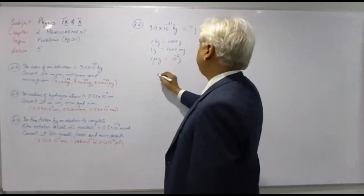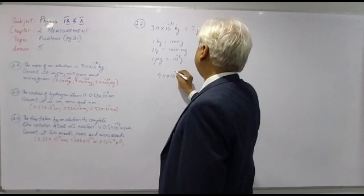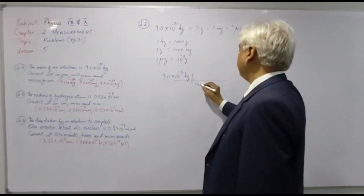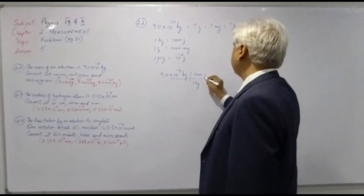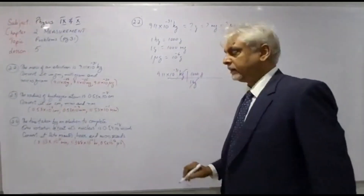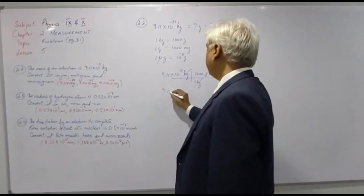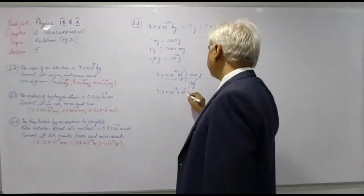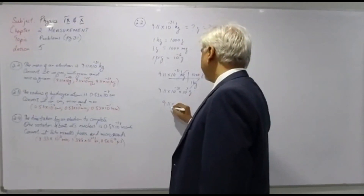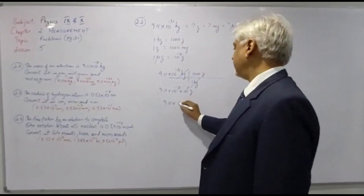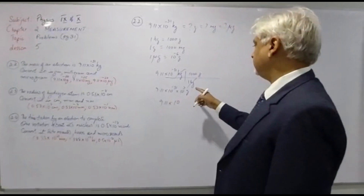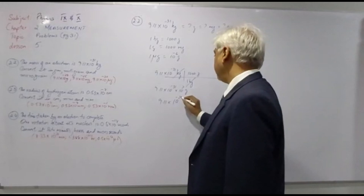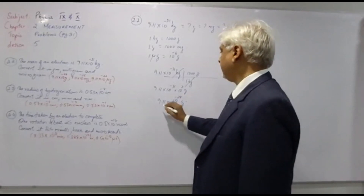9.11 times 10 to the power minus 31 kilograms in grams: 1 kilogram equals 1000 grams, so kilogram and kilogram will cancel out. We have 9.11 times 10 to the power minus 31 times 10 to the power of 3 grams, which gives us 9.11 times 10 to the power minus 28 grams.